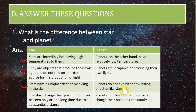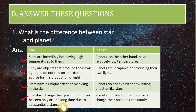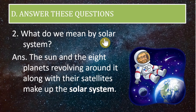The last difference: stars change their positions but can be seen to do so only after a long time due to their substantial distance, whereas planets in their orbits change their position constantly.